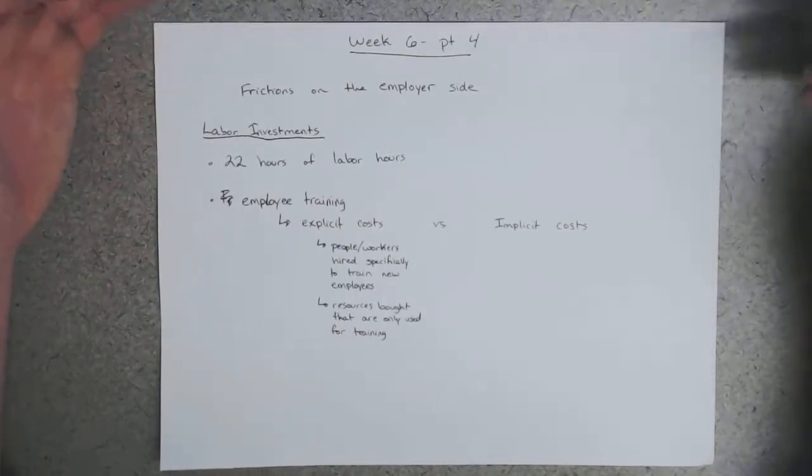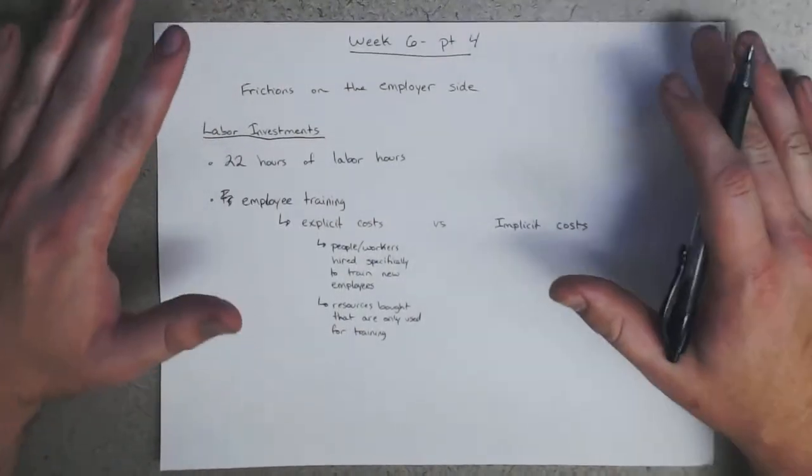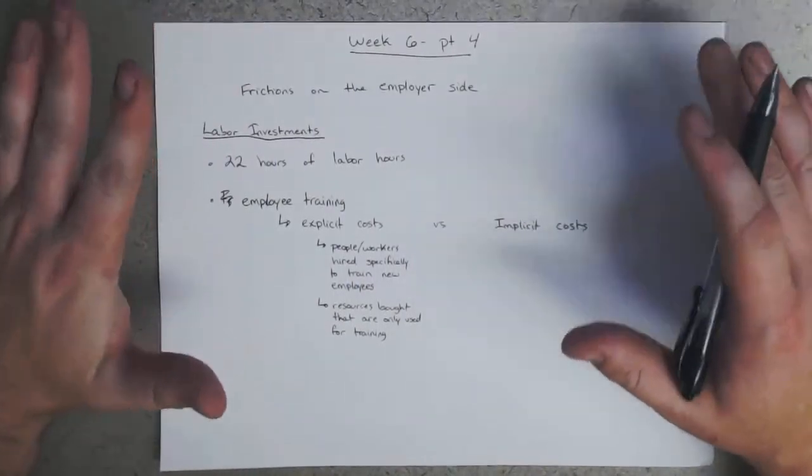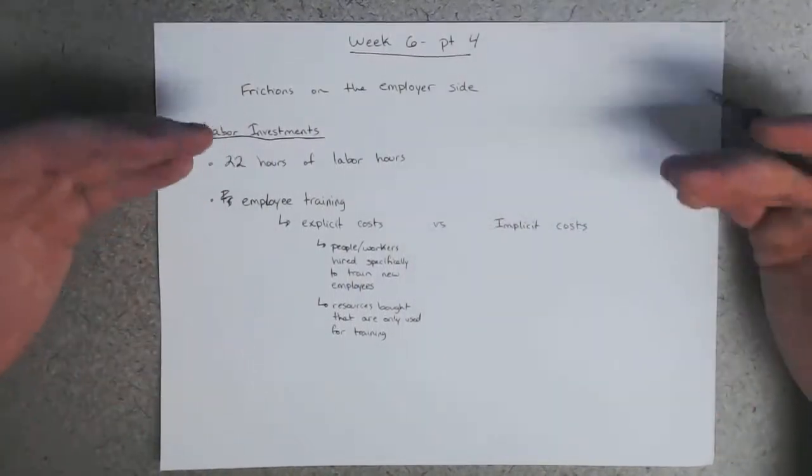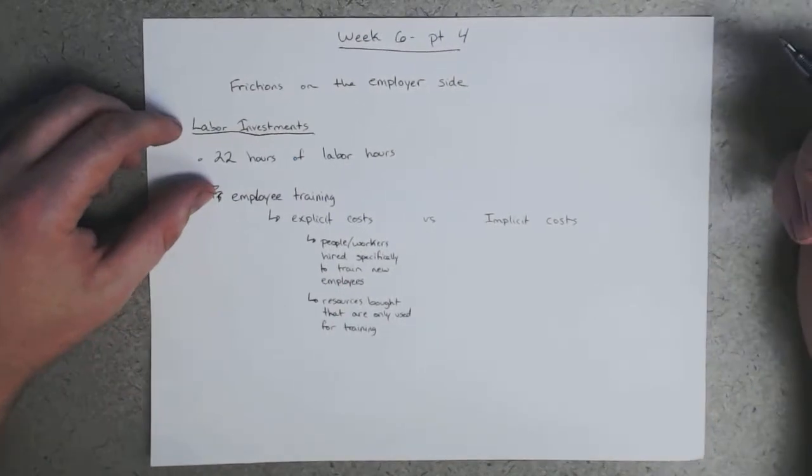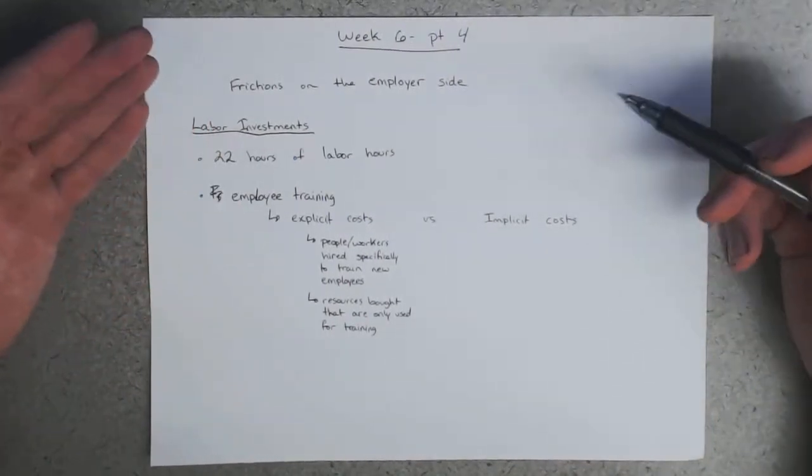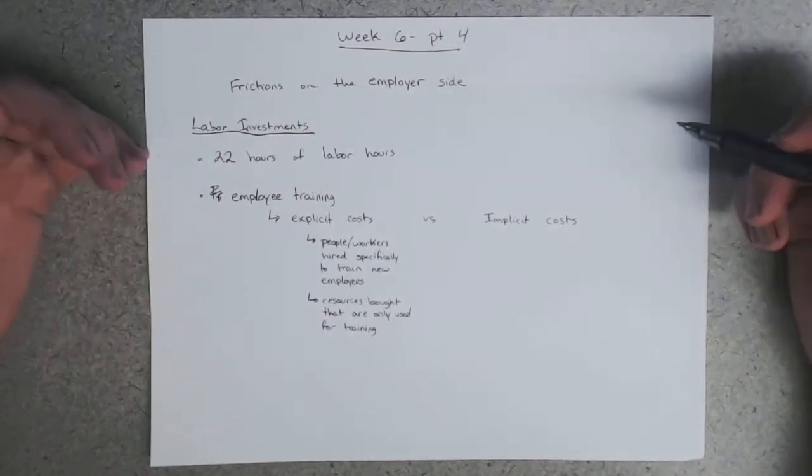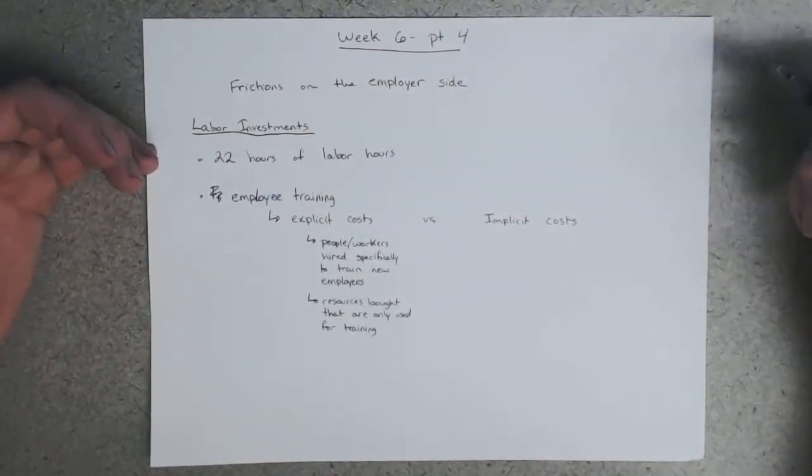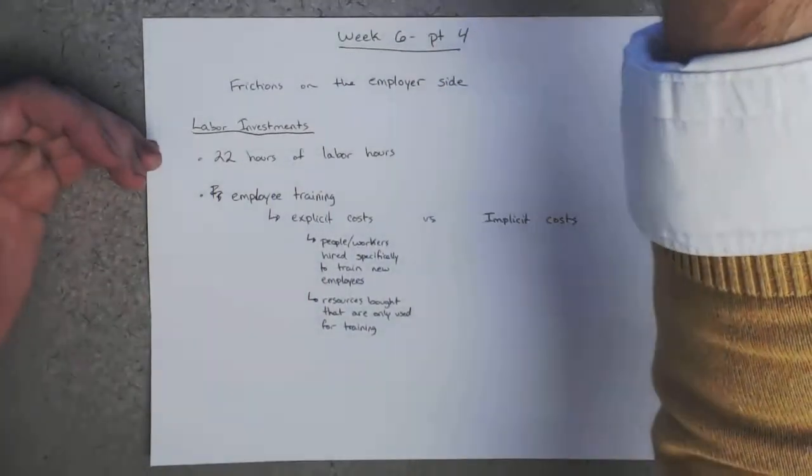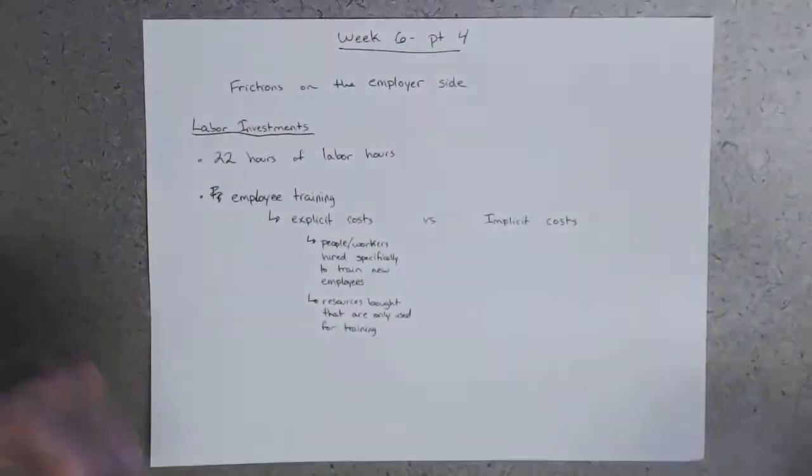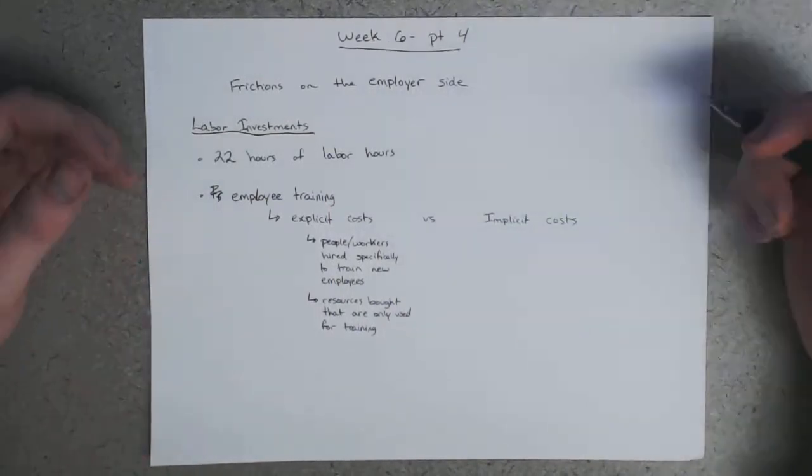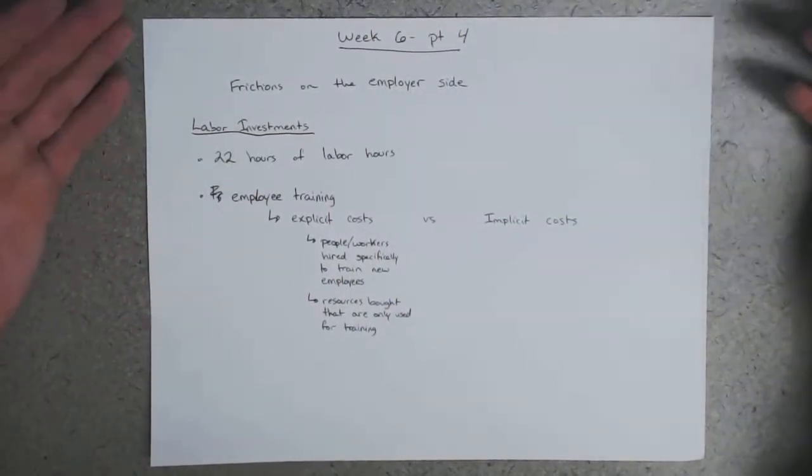HR departments are typically an explicit cost of employee training. They only exist for the most part. So I'm overgeneralizing, I know. Don't send me emails saying that I'm missing something. I agree, I'm overgeneralizing here. But HR departments generally only exist to basically help train new workers or to help answer questions about conditions of work. They're not there actually producing things. So the HR department at Ford is not on the assembly line making cars. They're there to handle disputes and to help facilitate training people.